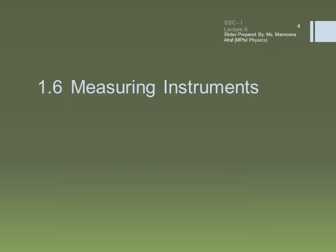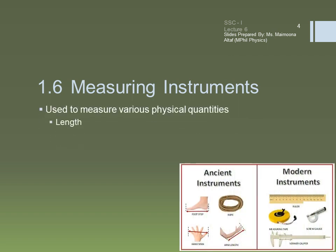Measuring instruments are used to measure various physical quantities such as length. In ancient times, people used footstep, hand span, rope, and arm length for the measurement of length. While the modern instruments include the ruler, measuring tape, vernier caliper, or the screw gauge.